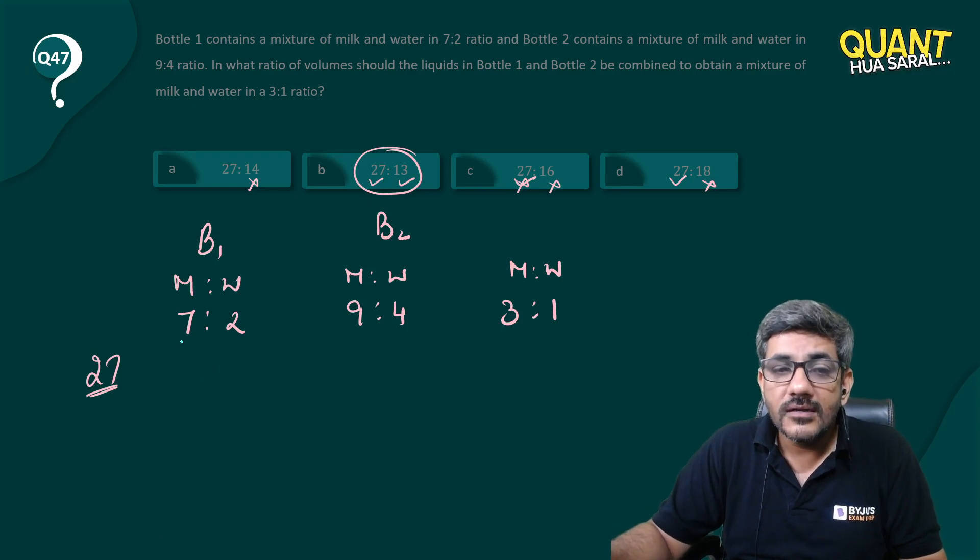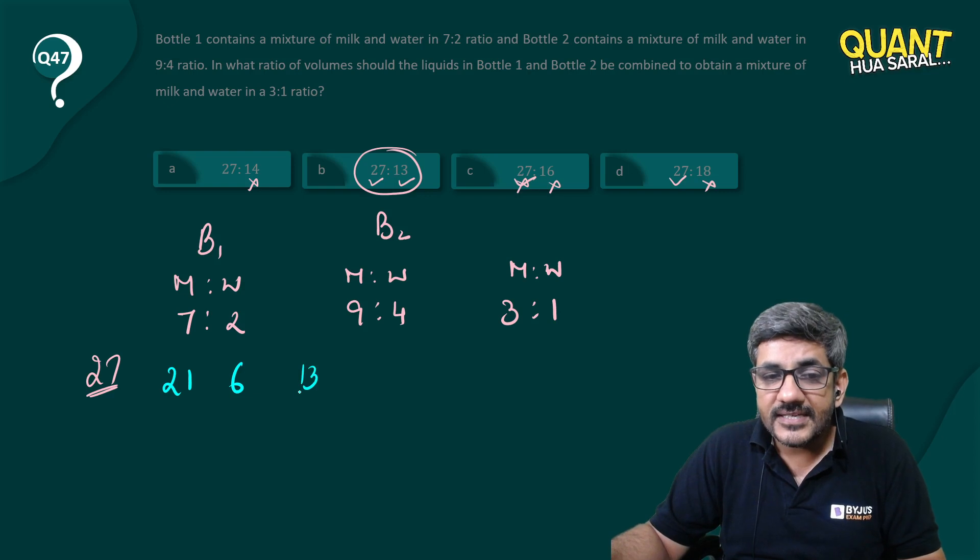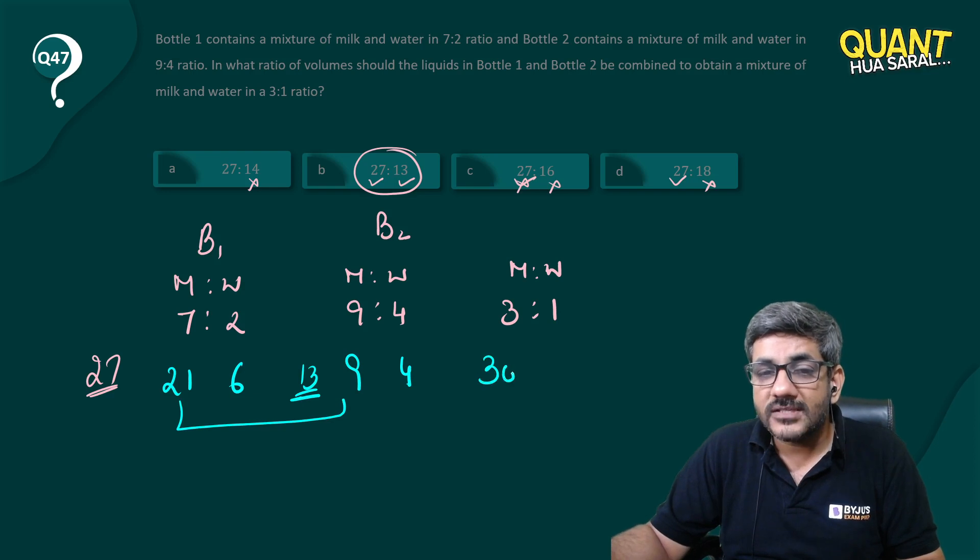It will have 21 milk and 6 water. If I take 13 liters from here, that will have 9 milk and 4 water. So how much total milk is there? 21 plus 9 equals 30. How much water is there? 6 plus 4 equals 10. Are they in a ratio of 3:1? Yes.